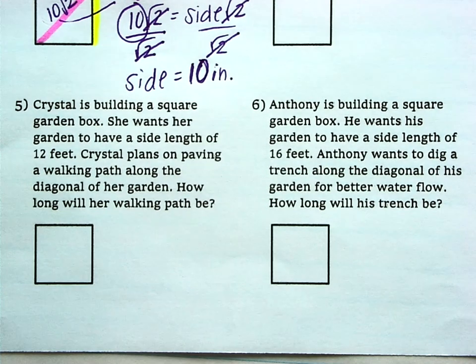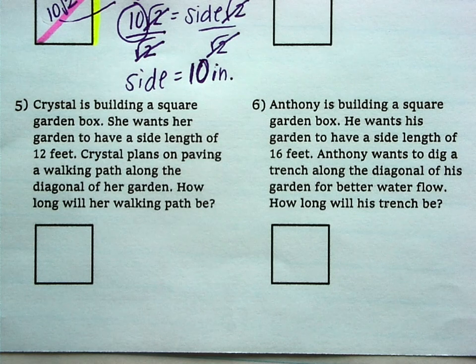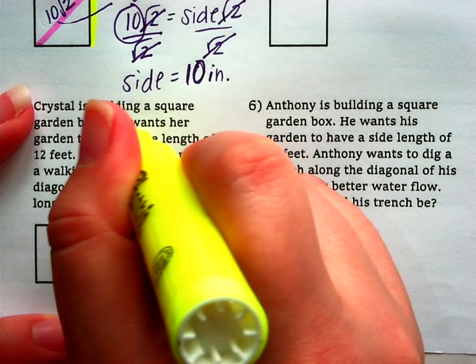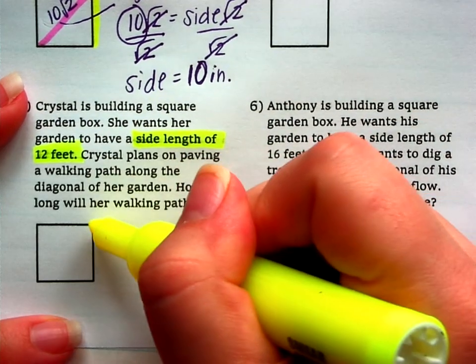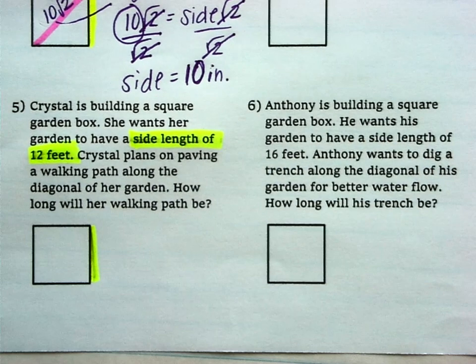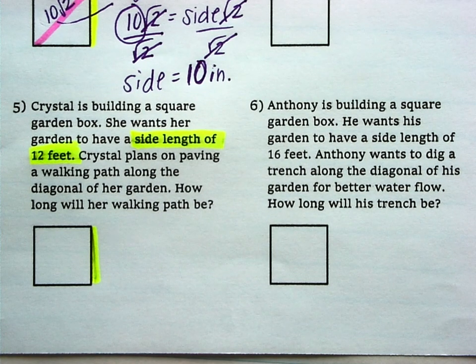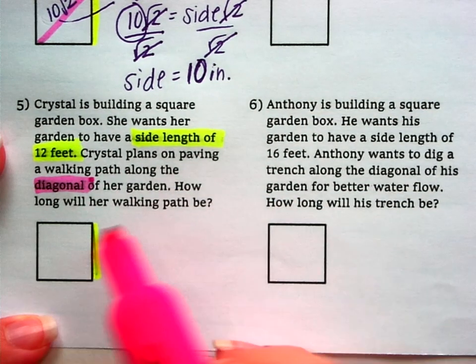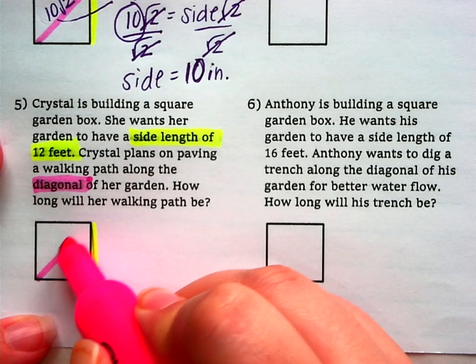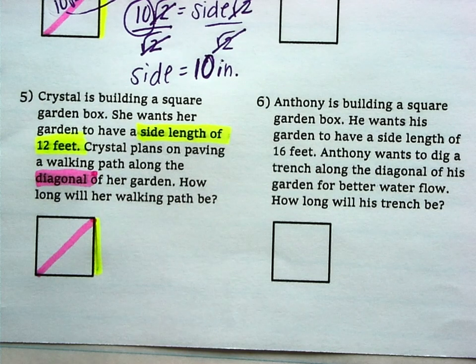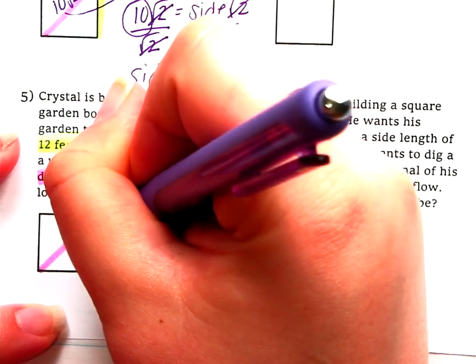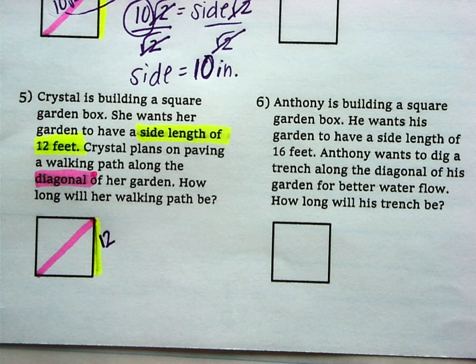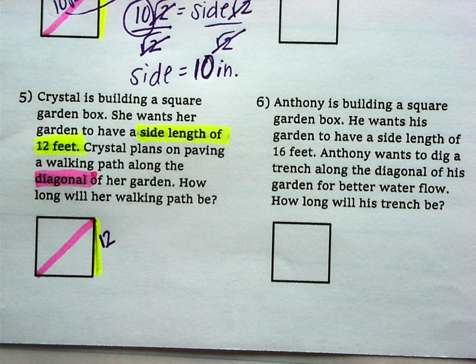Let's think about it in like a real world scenario. So, let's say Crystal is building a square garden box. She wants her garden to have a side length of 12 feet. Okay, so the side length is 12. Crystal plans on paving a walking path along the diagonal of her garden. So, she wants a walking path to go that way, along the diagonal. So, how can we figure out the length of her walking path? If it's the diagonal.